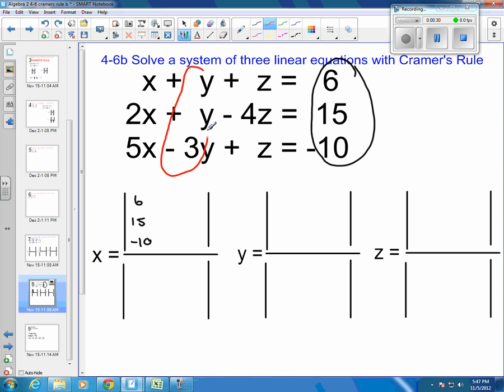Then, we are going to put our y's. So, our y's are a 1y, a 1y, and a negative 3y. And then, we're going to put our z's. And our z's are a 1z, a negative 4z, and a 1z.